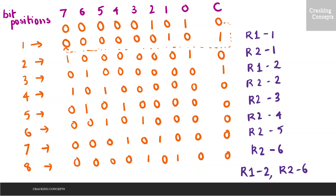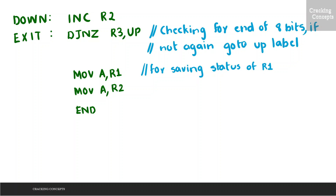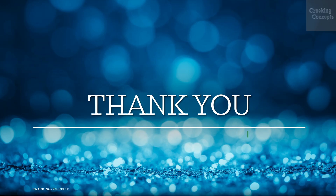So the final value of R1 is 2 and R2 is 6, which gives us a total of 8 bits. We will write each of these values into the accumulator and end the program with the END assembly directive. That's all for now. Thank you for listening.